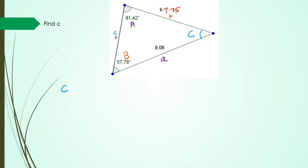Now angle C we know that it's angles in a triangle which equals 180 minus 81.42 minus 57.78 which gives us 40.8 degrees.